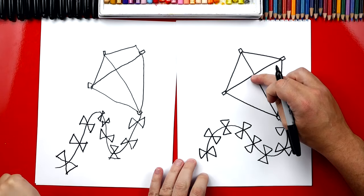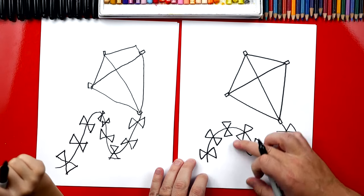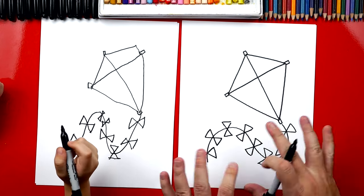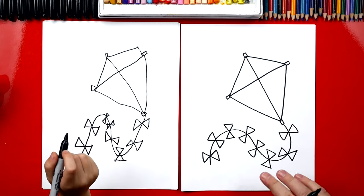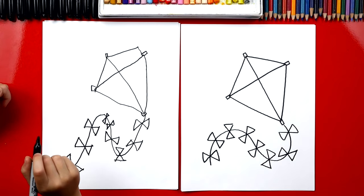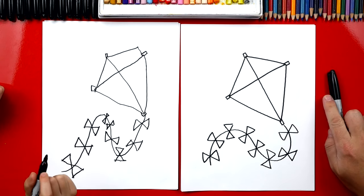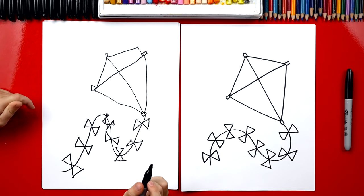Now if we wanted to, we could draw another line that comes down to the person flying the kite. But we're going to leave it off. We'll leave it just like this. Now we're done drawing. What do we still need to do though? Color it. Yeah, it's going to look so much better once we finish coloring our kite.